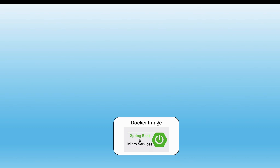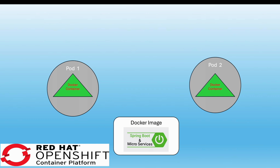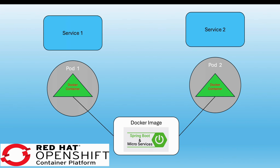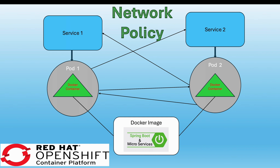In this demo we will build a microservice using the SpringBoot framework and create a Docker image from it. This image will then be deployed twice in OpenShift to set up two microservices. We will also configure services to manage input and output communication and enable the microservices to communicate with each other. By default, pods can communicate with each other without restriction, and we will see how to control this behavior using network policies.